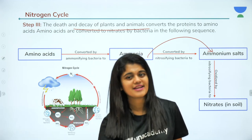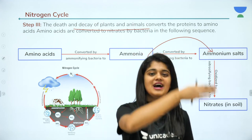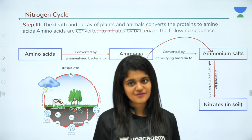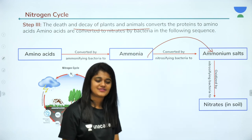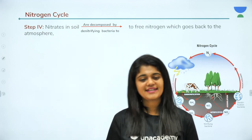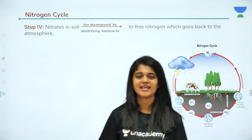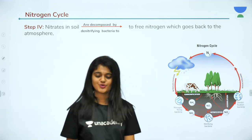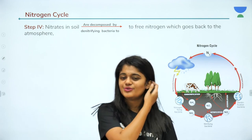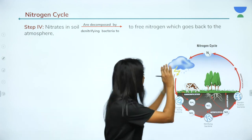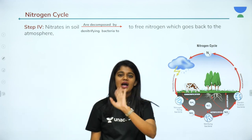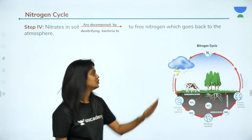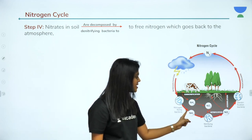So this completes one full nitrogen cycle: from atmosphere → nitrogen fixation → nitrates in soil → plants and animals → death and decay → back to atmosphere. The nitrogen cycle is very essential for living organisms. All major steps involve bacterial action: denitrifying bacteria, nitrogen-fixing bacteria, and nitrifying bacteria all play crucial roles in driving reactions of nitrogen.